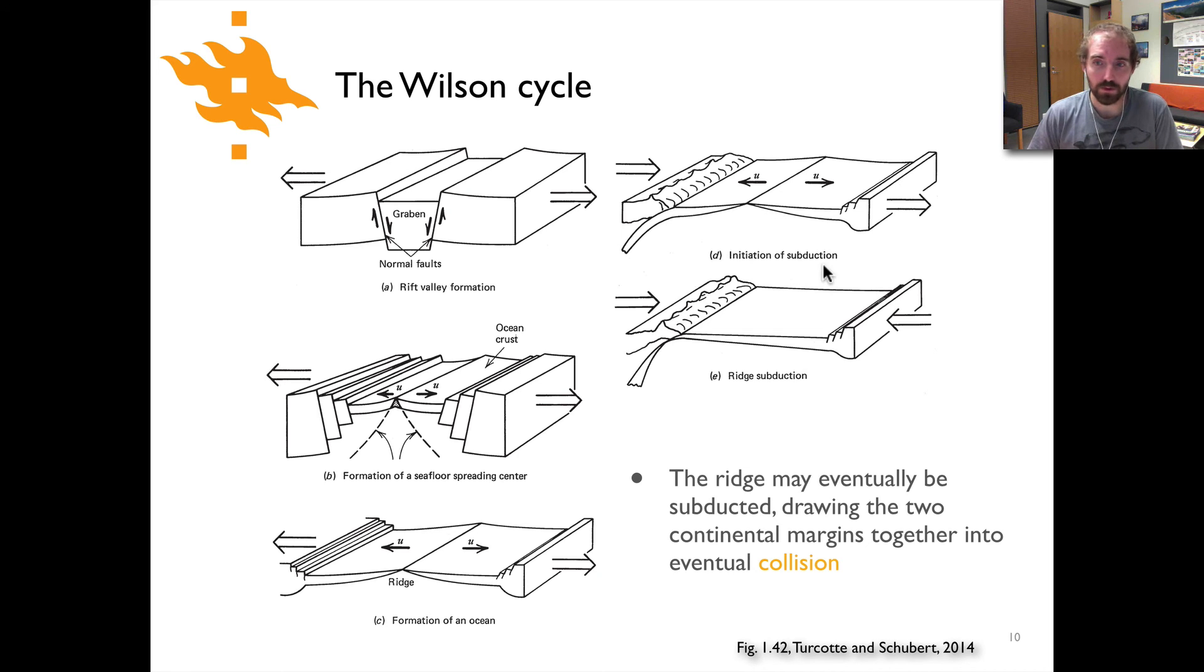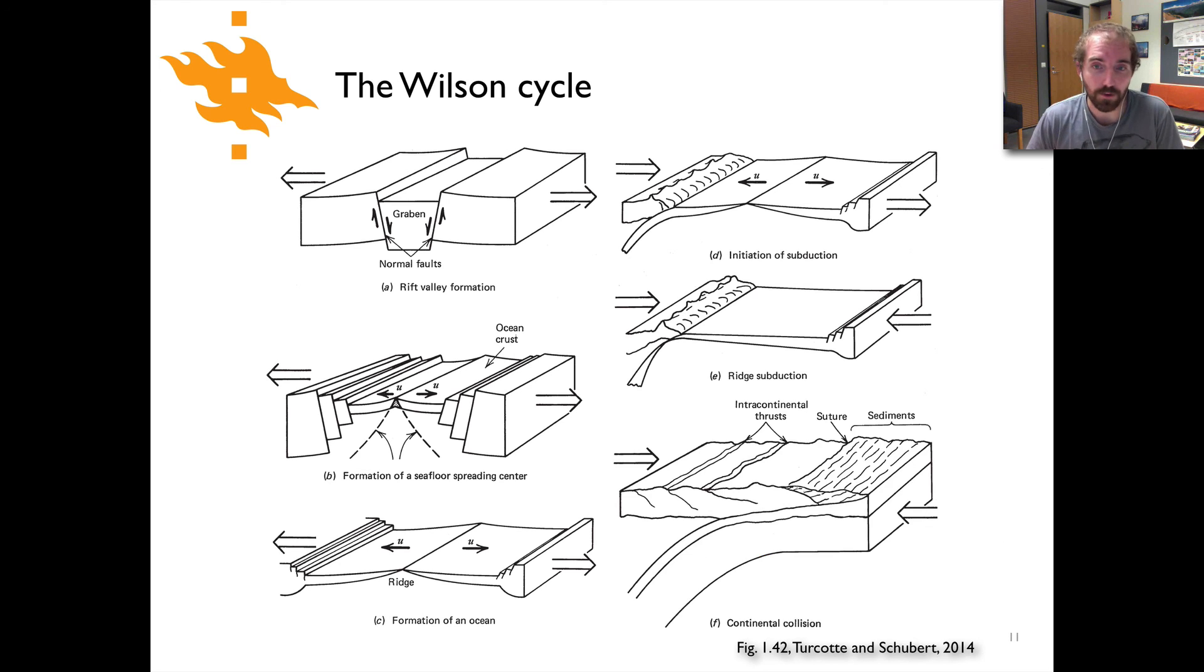As subduction continues, we now have relative convergence of the plates on either side of the spreading ridge. In this case, in panel E, we've already subducted the ridge, and so the two plates are now coming closer together. As you can imagine, the excitement is about to kick off, and that is continental collision. As that basin is slowly closed, eventually we will have one continent collide with what was actually the other side of the continent initially, after the ocean basin has formed and then closed itself back up.